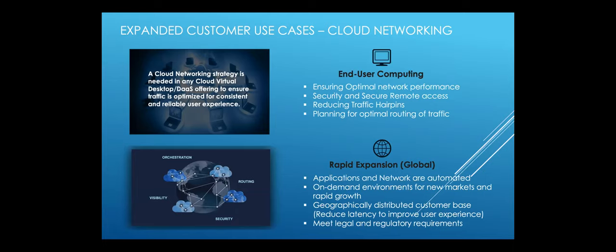We're always trying to solve for optimal experience. Network performance is really about the end user's experience — customer satisfaction, making things fast and simple. Customers can no longer wait; even corporate users can't wait for an app to load or a database to synchronize. It has to be fast and seamless. Reducing traffic hairpins is something we commonly see, and Aviatrix solves for that with an intelligent view of the network — learning and propagating routes automatically and ensuring traffic symmetry.